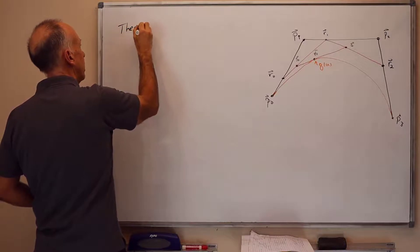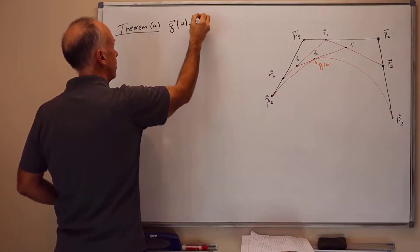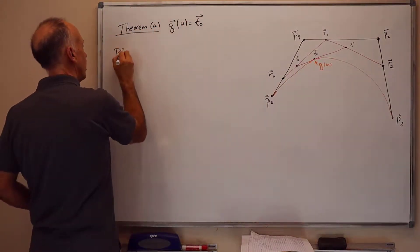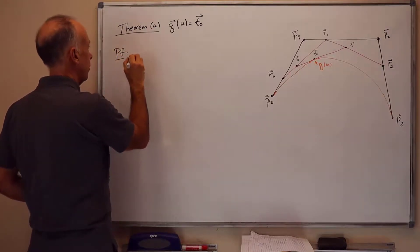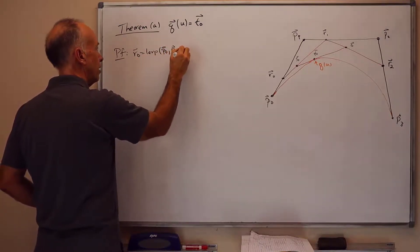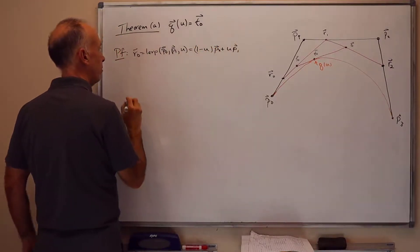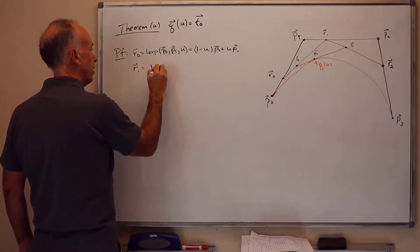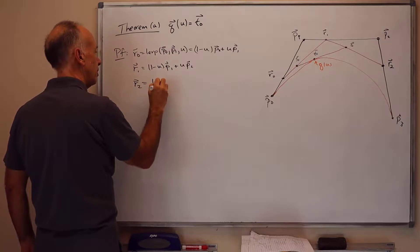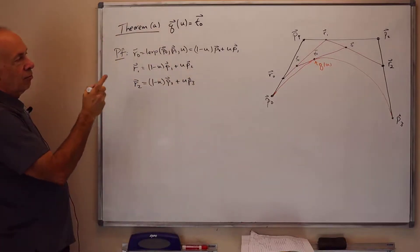So let's recall theorem A, which was that Q of U equals T0, where T0 was defined as in over there. So let's just write out the proof here. So first of all, we know that R0 is lerp P0 P1 U. So that's (1 - U) times P0 plus U times P1. Likewise, R1 is equal to (1 - U) times P1 plus U times P2.